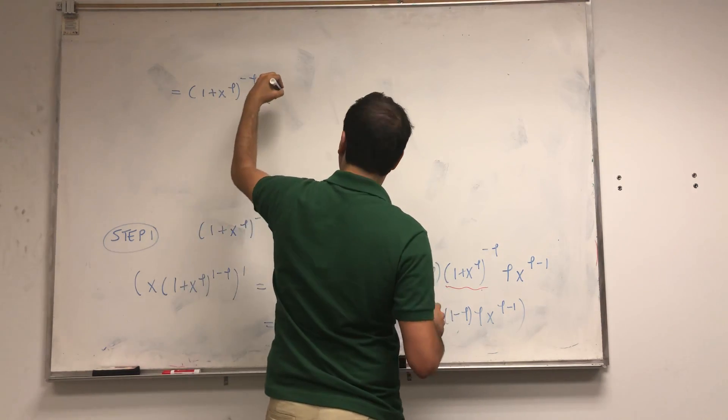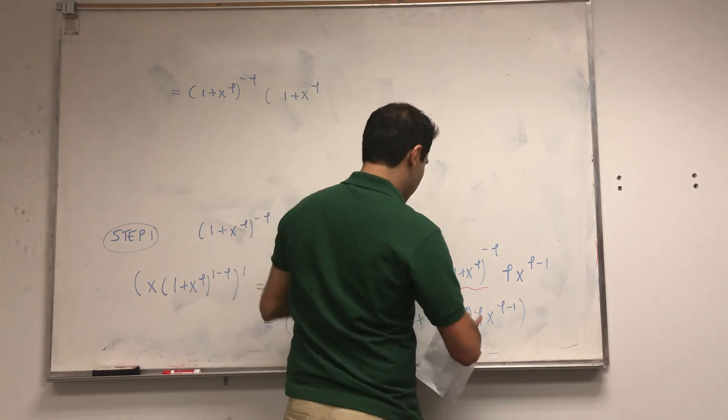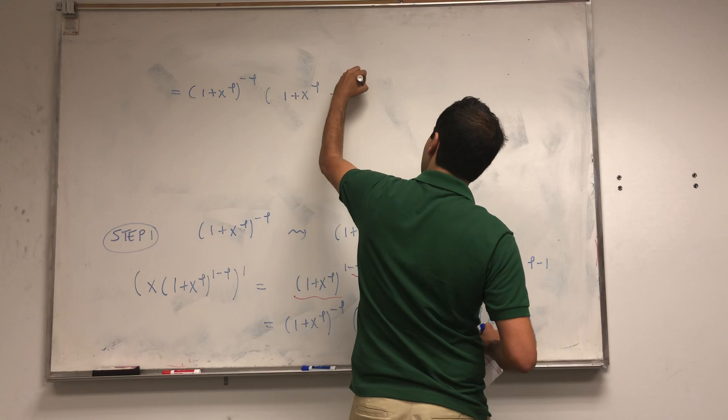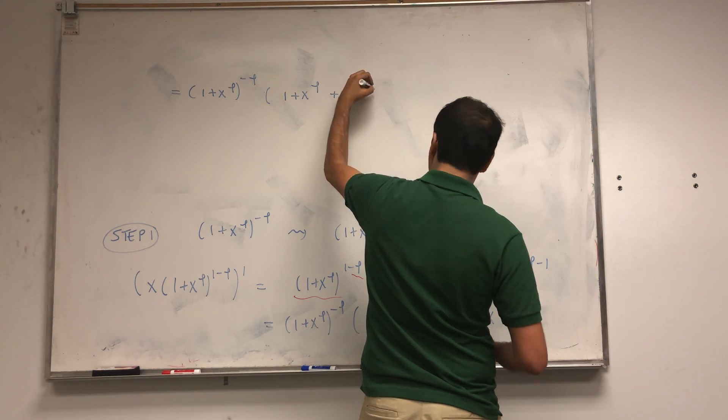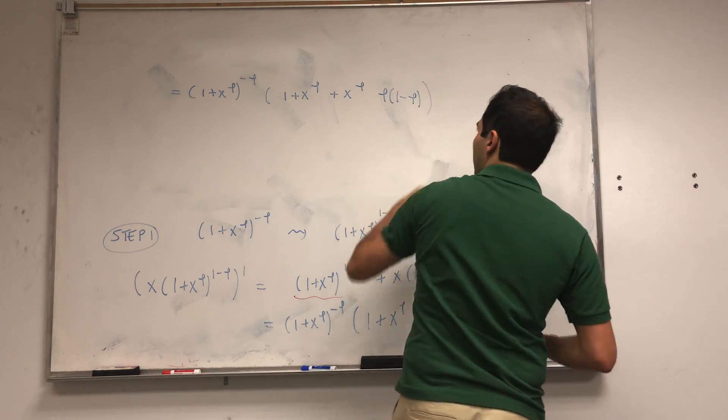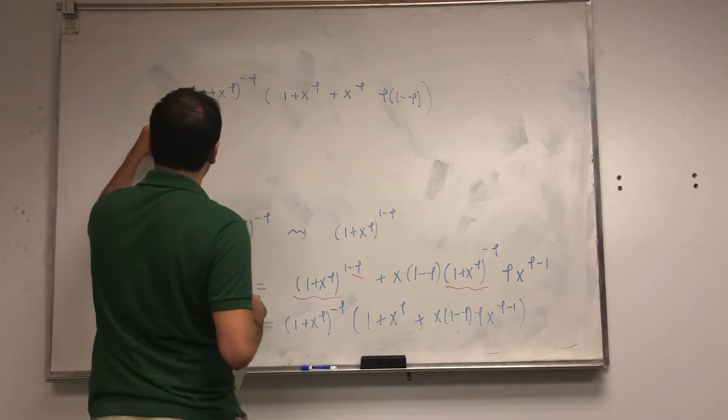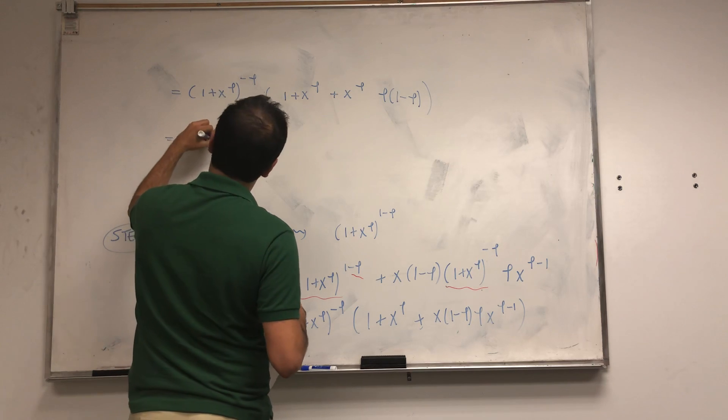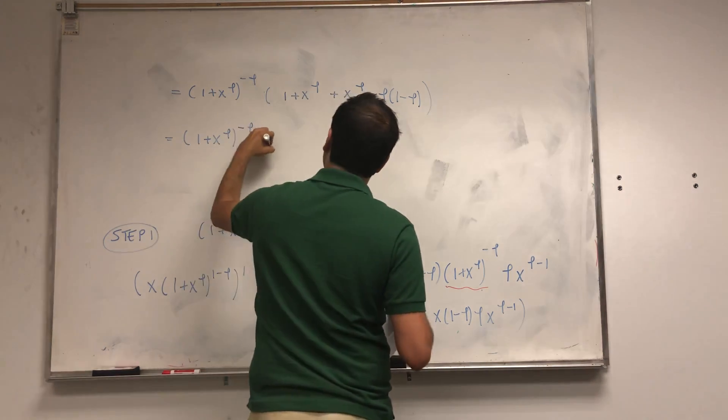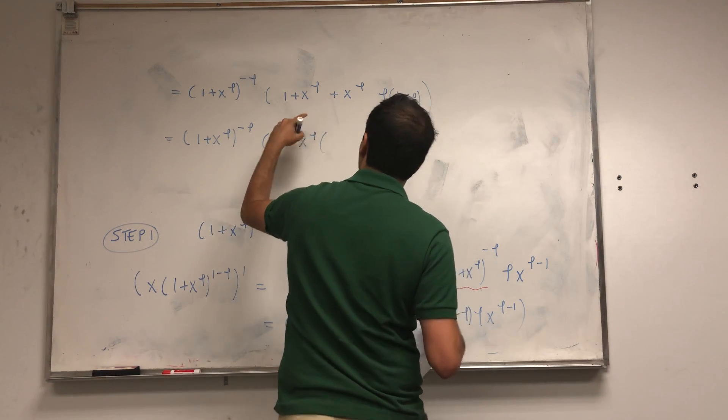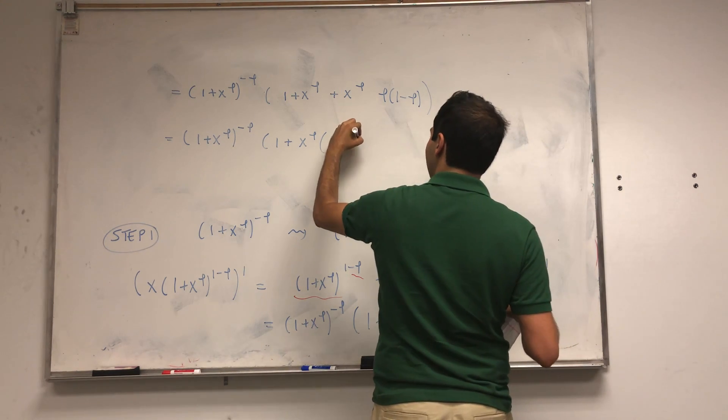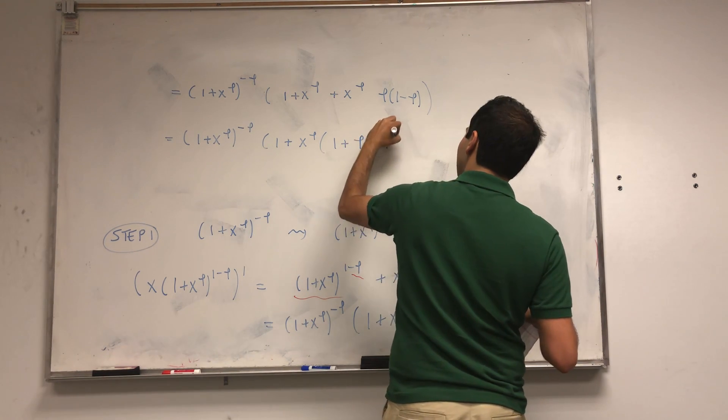So that becomes (1 + x^phi)^(-phi) times [(1 + x^phi) plus x^phi times phi times (1-phi)]. Let's expand that out: 1 + x^phi + x^phi(phi - phi^2).